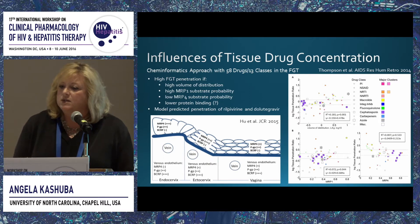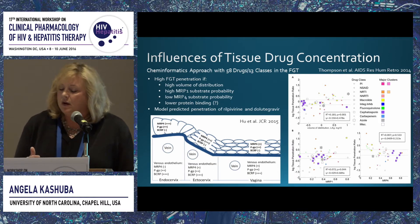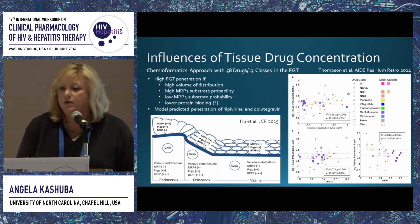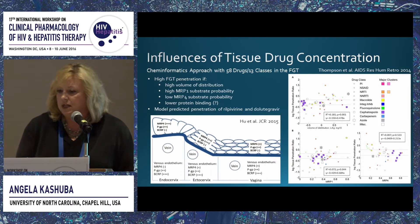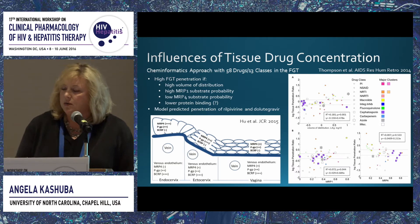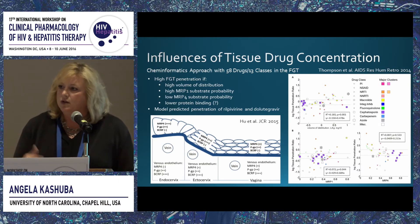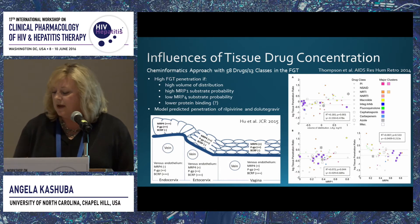What he found was that there was higher female genital tract penetration if there was a higher volume of distribution, if the drug was likely a substrate for MRP1, if it was not likely a substrate for MRP4, and potentially if there was lower protein binding, although the model didn't reach significance with that parameter. Using those characteristics, he evaluated rilpivirine and dolutegravir — not in the original dataset — and found the model predicted their penetration in the female genital tract. However, we just don't have enough data yet to develop a complete predictive model.